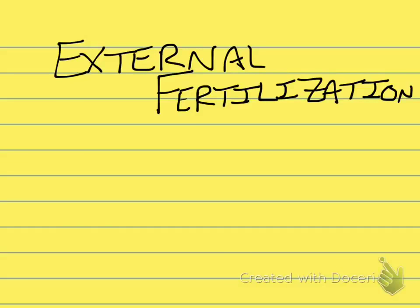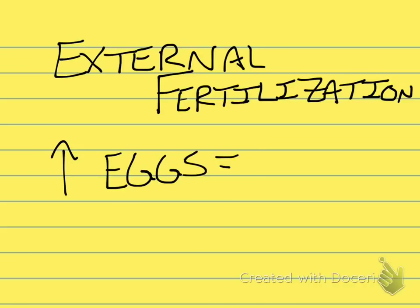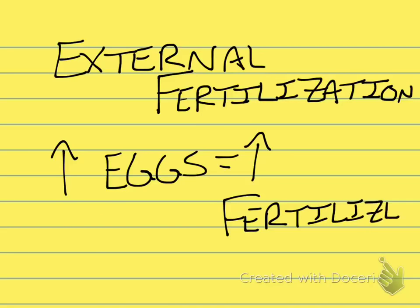Now you may be wondering: why would any animal try to reproduce this way if there are so many things that can go wrong? Well, since the animals are releasing so many eggs at one time, that also increases the chances that at least some of them are going to be fertilized. And that's a good thing.